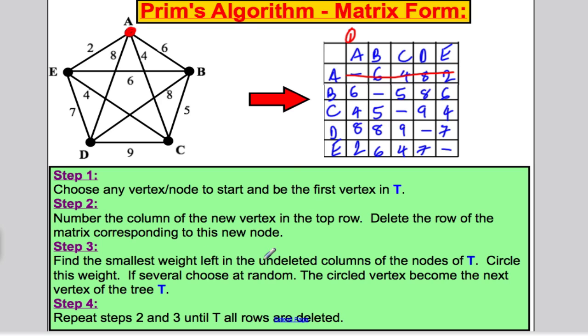It says choose any vertex or node to be your start and your first vertex in T, so I'm going to choose A. It says number the column of the new vertex in the top row, so I'm going to number that, number one. Then it says delete the row of the matrix corresponding to this, so delete row A. The circled vertex becomes the next vertex of the tree. Here, A, E of two is in my spanning tree.